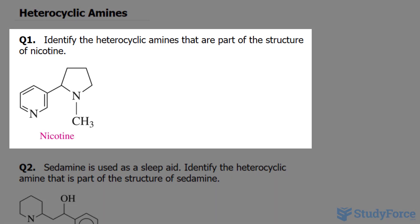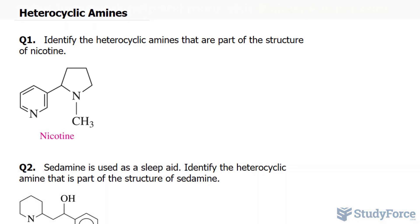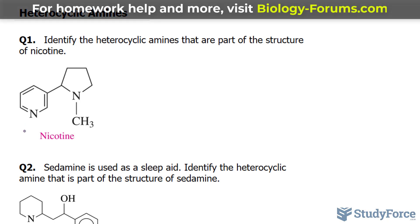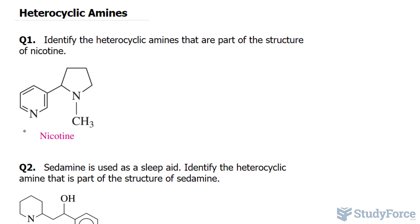Take a look at the nicotine molecule. We have two of these rings, which we call heterocyclic rings. A heterocyclic ring is an organic compound characterized by the atoms joined together in a ring formation, except at least one of the atoms in the ring isn't carbon. We see two instances of this here, where we have nitrogen instead of carbon.